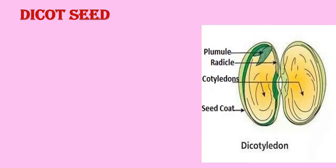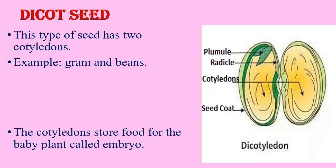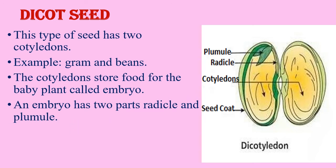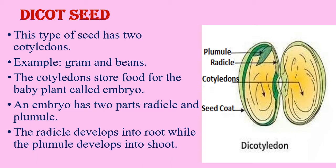The structure of a dicot seed: this type of seed has two cotyledons. Examples are gram and beans. The cotyledons store food for the baby plant called the embryo. An embryo has two parts: the radicle and the plumule. The radicle develops into a root while the plumule develops into a shoot.